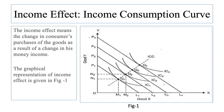Thus the income effect means the change in consumer's purchases of the goods as a result of a change in his money income. The graphical presentation of income effect is given in figure one. In figure one, it can be seen that with given prices and given money income as indicated by the budget line P1L1, the consumer is initially in equilibrium at Q1 on the indifference curve IC1, having OM1 quantity of X commodity and OM1 quantity of Y commodity. Now suppose that income of the consumer increases — with his increased income he would be able to purchase larger quantities of both the goods.